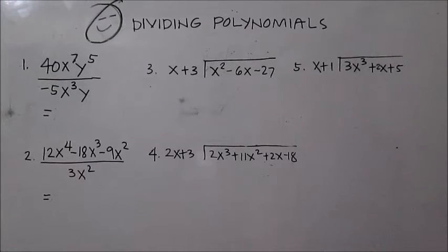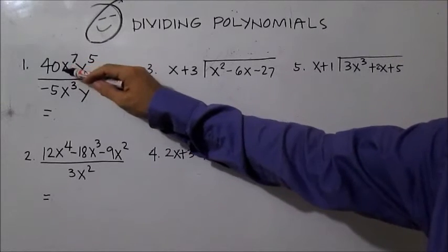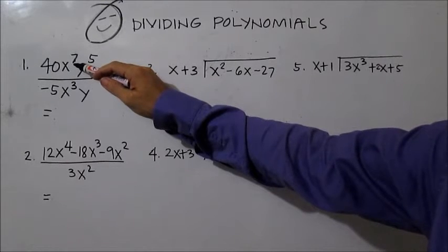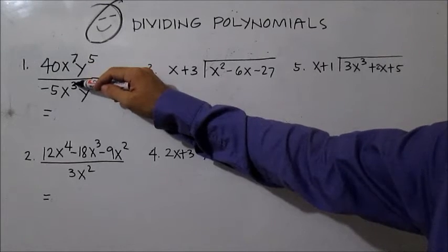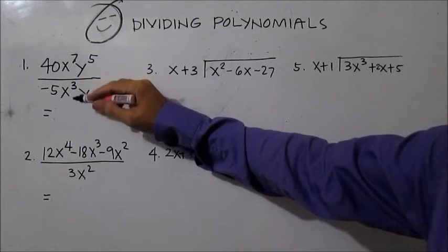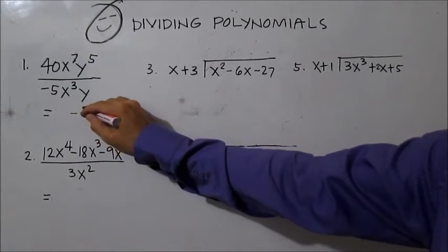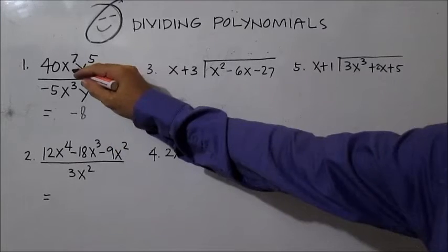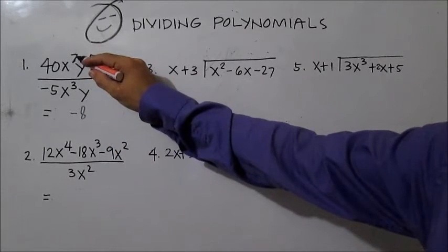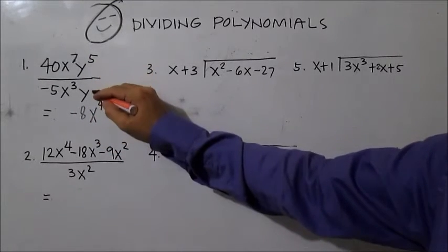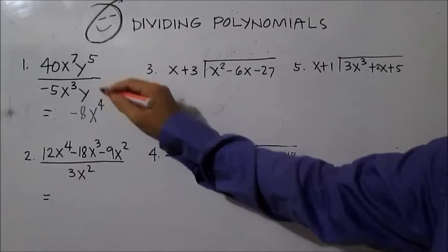Dividing polynomials, number one: divide a monomial by another monomial. Divide the coefficients and remember how to divide powers — to divide powers with the same base, subtract the exponents. In this case, 40 divided by negative 5 is negative 8. Then x to the power of 7 divided by x cubed: subtract the exponents, 7 minus 3 is 4, so you have x to the 4th. And here you have y to the power of 4.